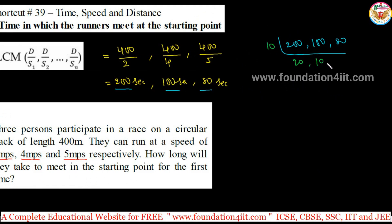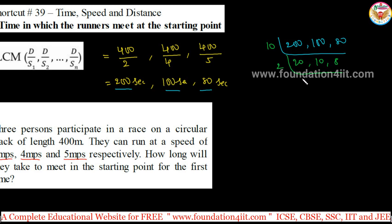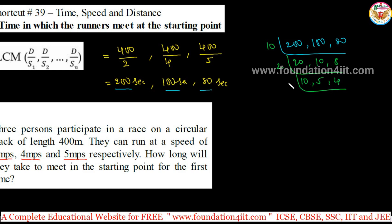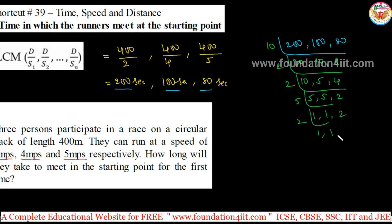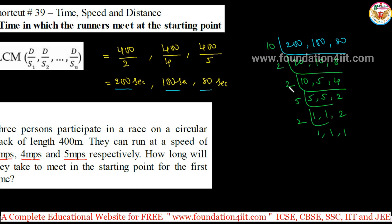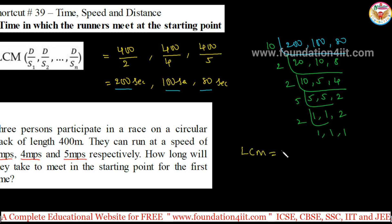For the LCM calculation: divide by 10 to get 20, 10, 8. Then divide by 2 to get 10, 5, 4. Again divide by 2 to get 5, 5, 2. Then divide by 5 to get 1, 1, 2. Finally divide by 2 to get 1, 1, 1. Multiply all divisors: 10 × 2 × 2 × 5 × 2 = 400. The total LCM equals 400.